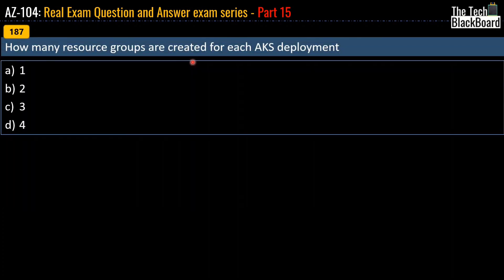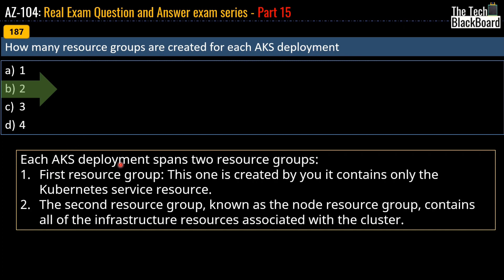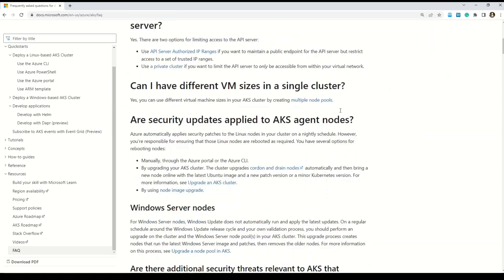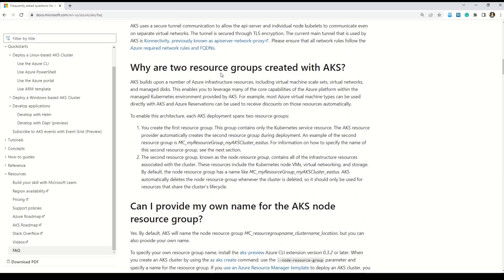Question 187: How many resource groups are created for each AKS deployment? Options: one, two, three, or four. The correct answer is two. Each AKS deployment spans two resource groups: the first is created by you and contains only the Kubernetes service resource; the second, known as the node resource group, contains all infrastructure resources associated with the cluster. Microsoft has a brilliant FAQ page on Azure Kubernetes Service — the link is in the description box.